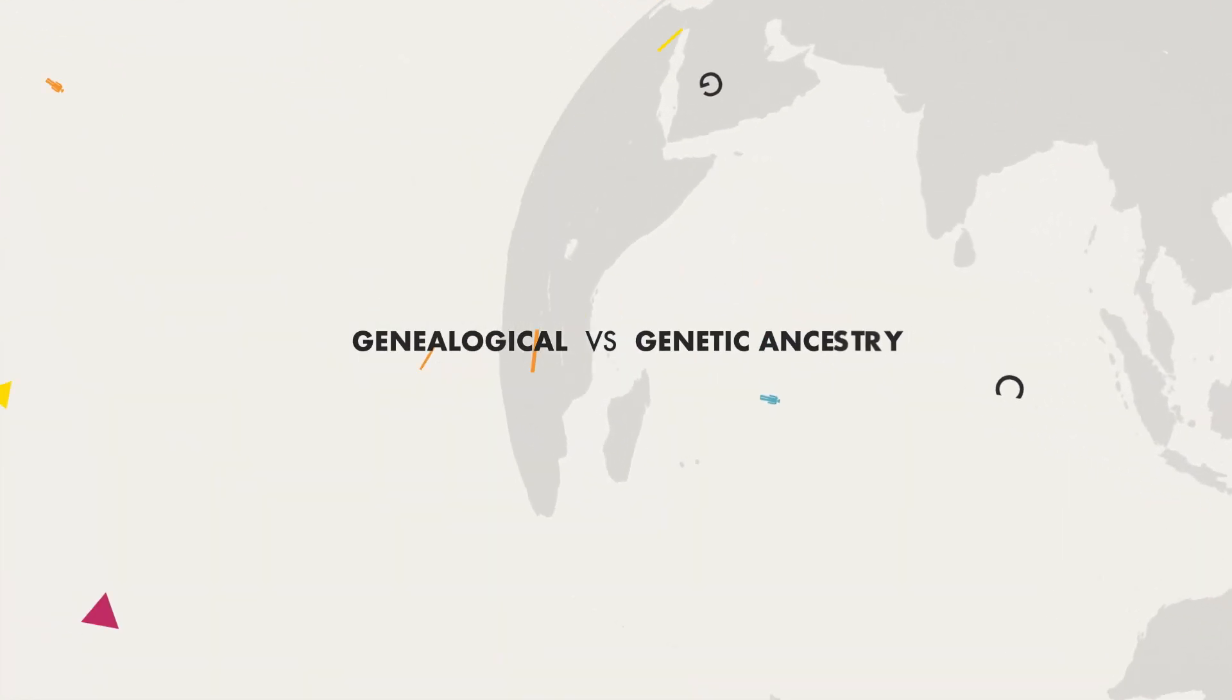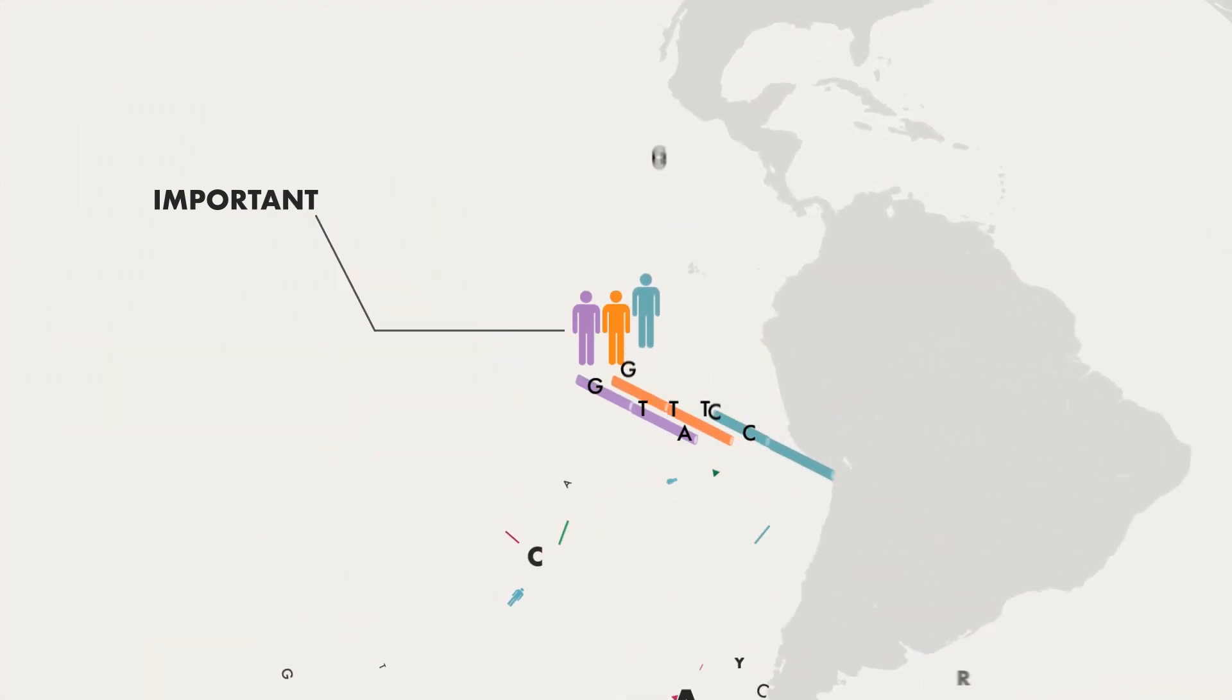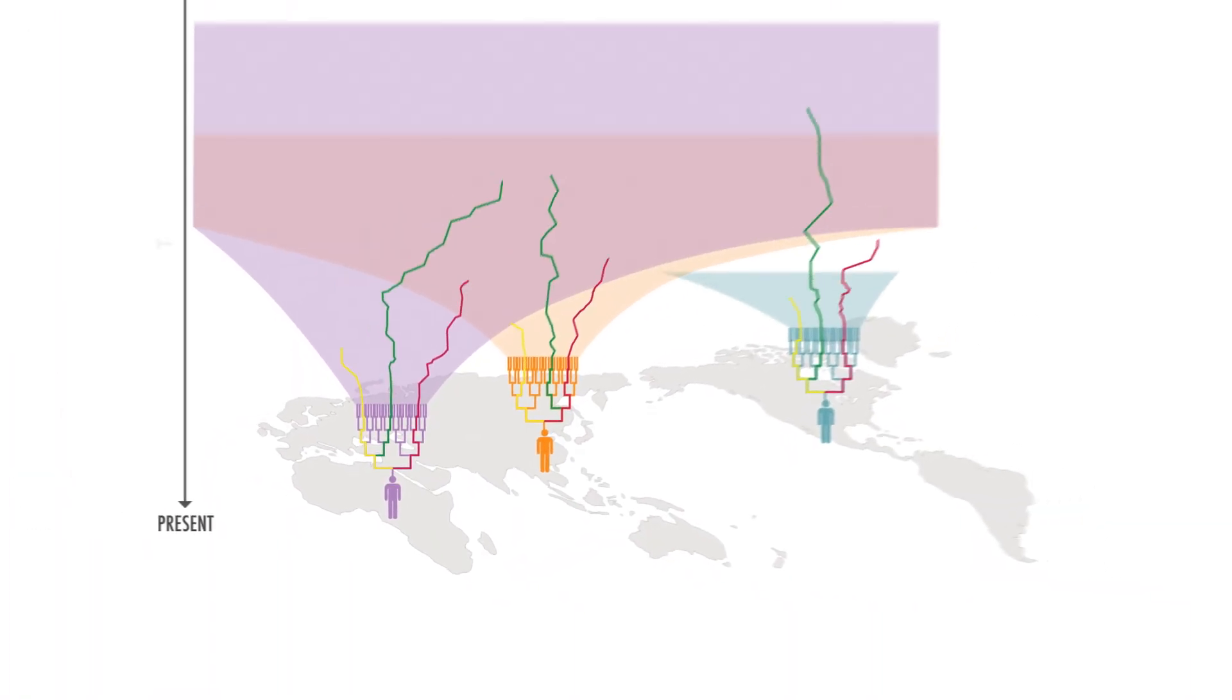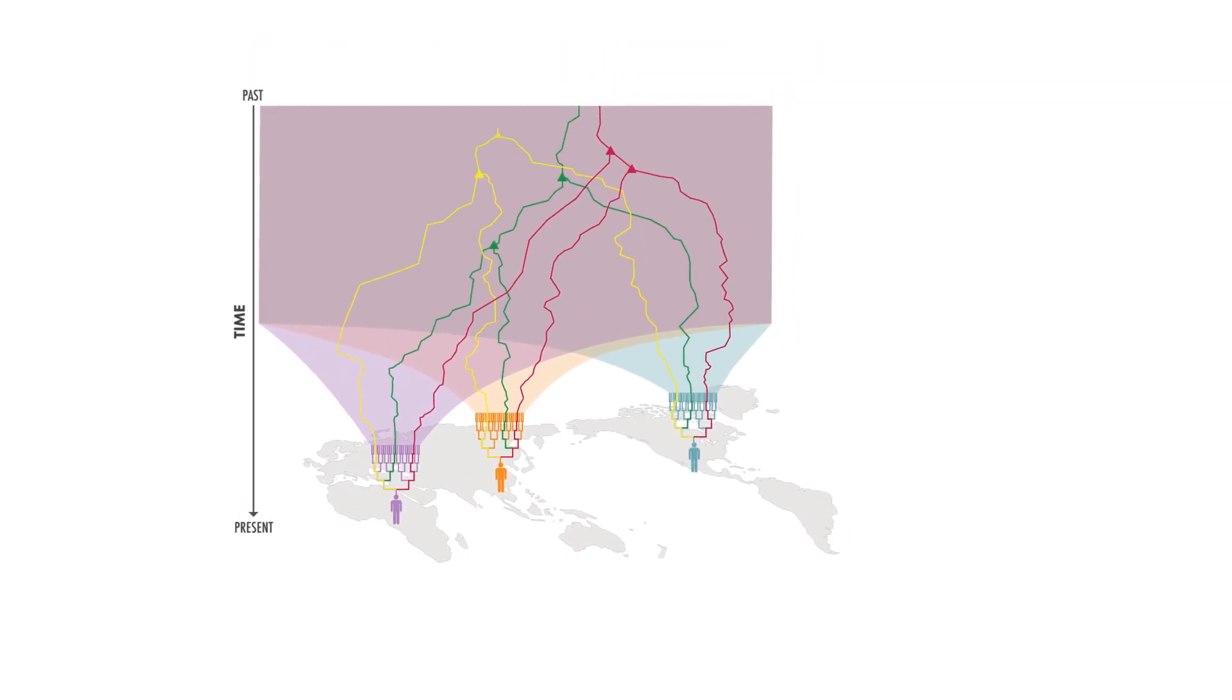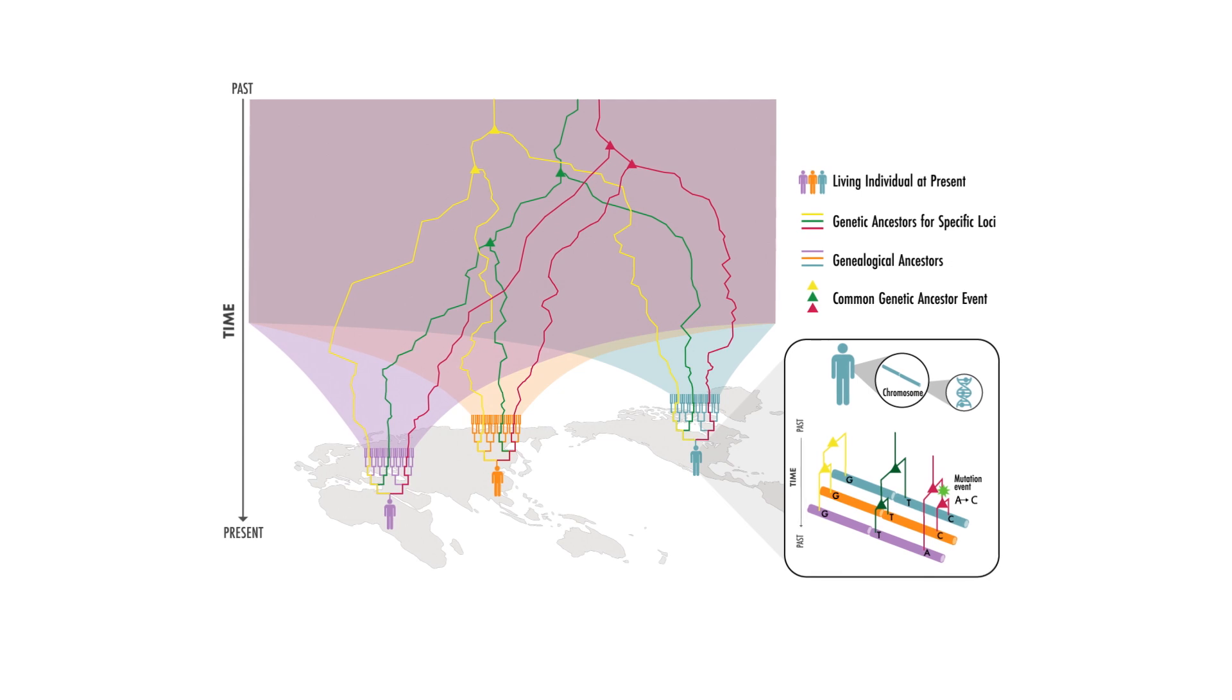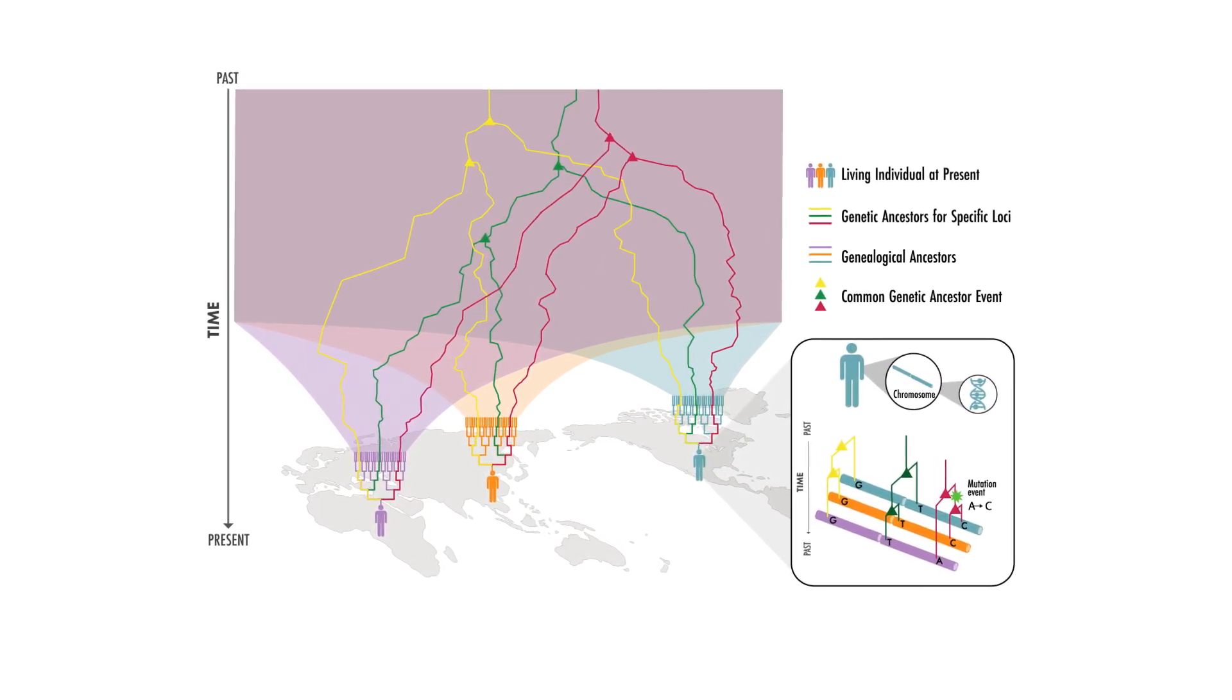Understanding the distinction between genealogical and genetic ancestry is important for thinking about human genetic variation and population descriptors. This graphic from the 2023 report Using Population Descriptors in Genetics and Genomics Research, a new framework for an evolving field, explains key differences between genealogical versus genetic ancestry.